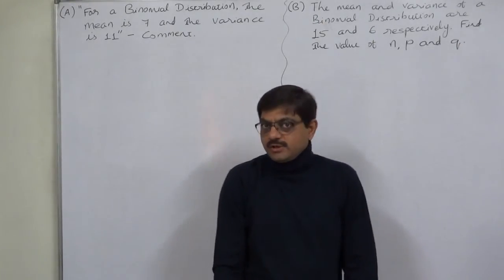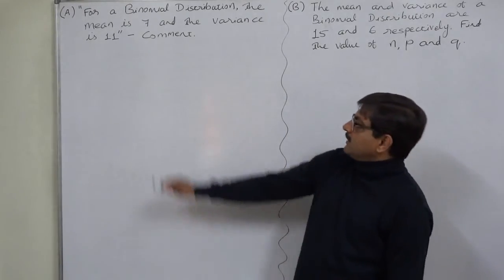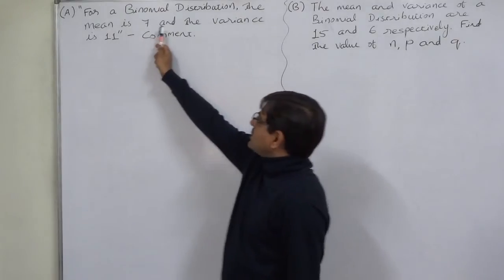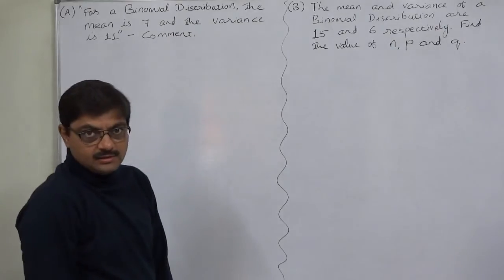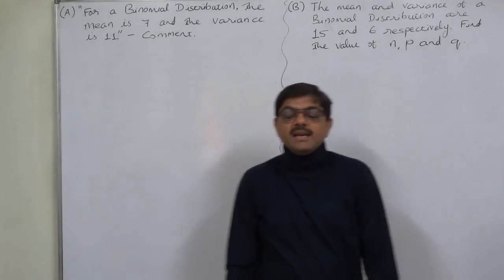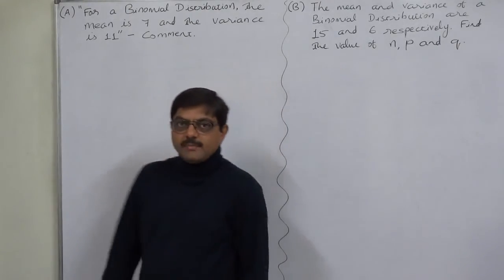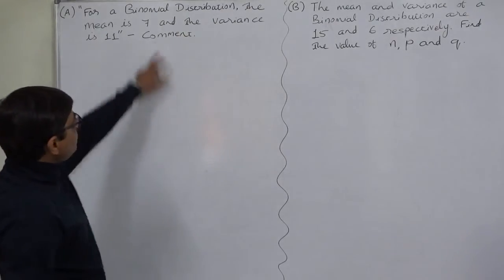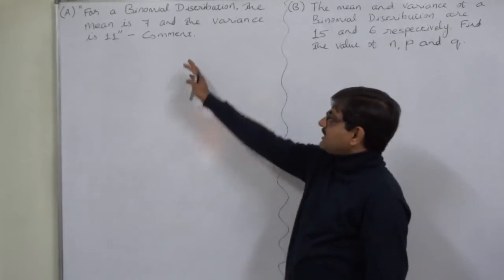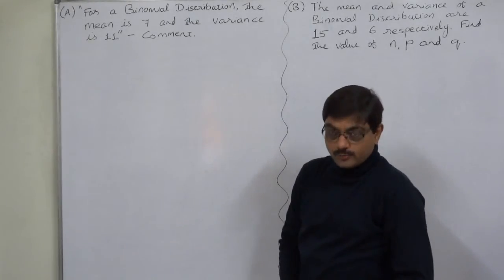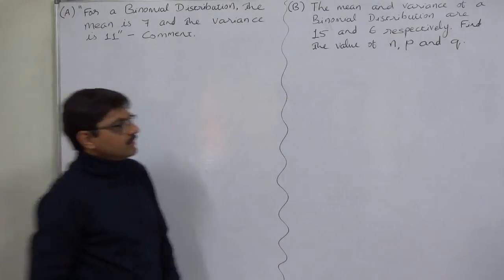Now mean is 7 and variance is 11, and the distribution is binomial. If we take the reference of properties of binomial distribution, one property is the mean is always greater than its variance. Theoretically it is also said that mean is greater than or equal to variance, but practically mean can never be equal to variance in case of binomial distribution. So the reference of the property says that this statement is not true.